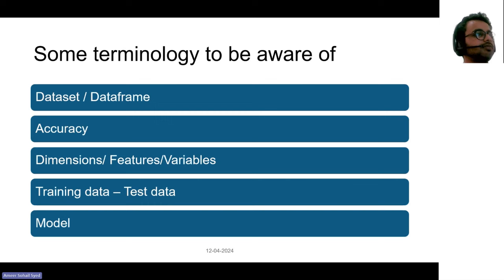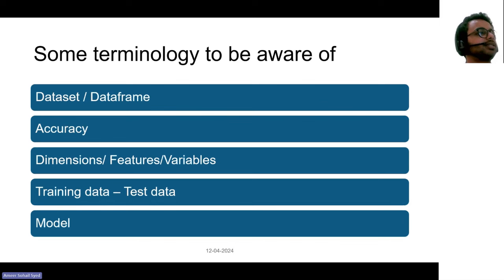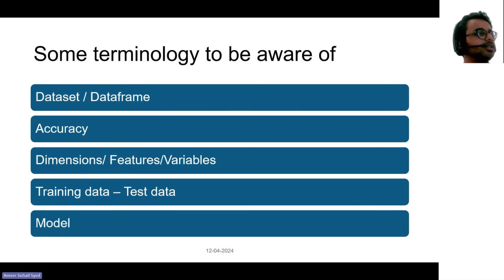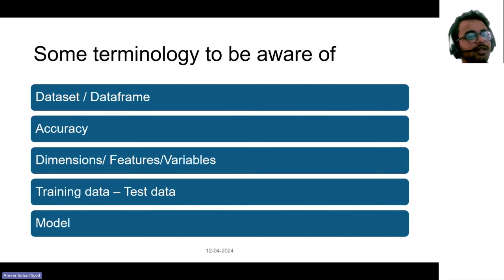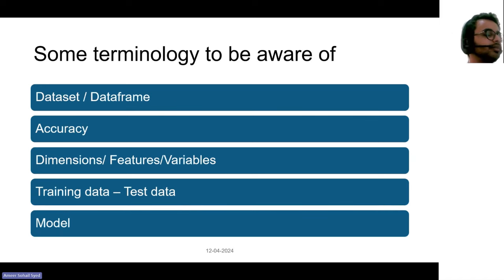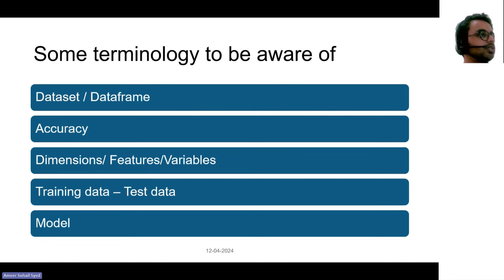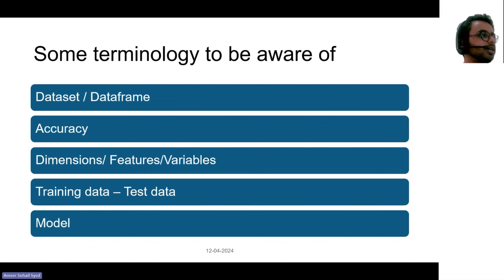Dimensions, features, and variables — these all mean the same thing: the column names. If you work with any Excel file, you just have column names like patient name, NHS number, date of birth. These are called dimensions, or features, or variables. These terms are used quite interchangeably in this domain. With time you don't need to remember this — once you start getting used to it, it just comes naturally.